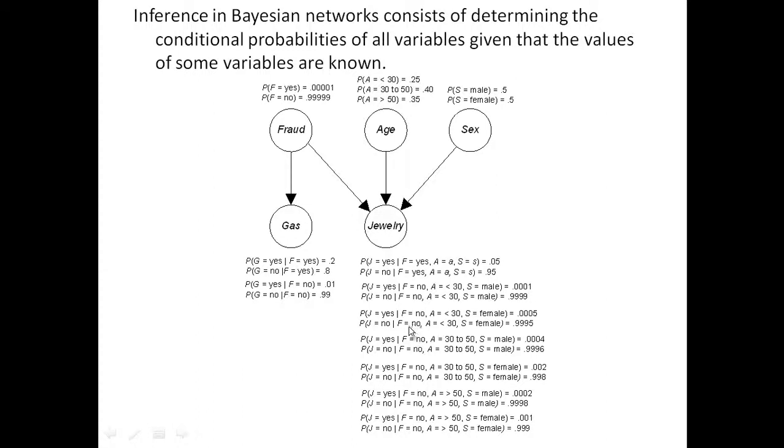An older woman is more likely to buy jewelry than a younger man. So let's look at some of these variables. If it's not being used fraudulently, and you're young, and you're a female, the probability is .0005.